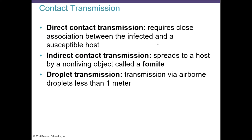Indirect contact transmission usually involves a non-living object called a fomite. Fomites can include syringes, hospital equipment, and surgical instruments. Another example is stepping on a rusted nail — Clostridium tetani lives in the pores of rusted metal. A catheter is another example. It doesn't need to be in a healthcare facility; it's any object that transmits disease.